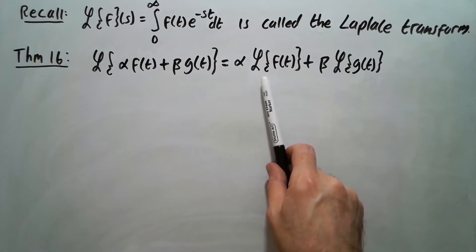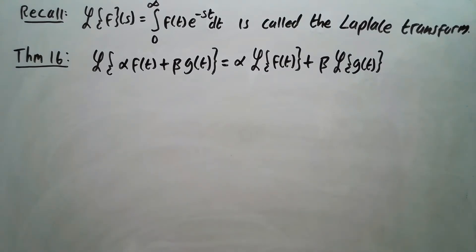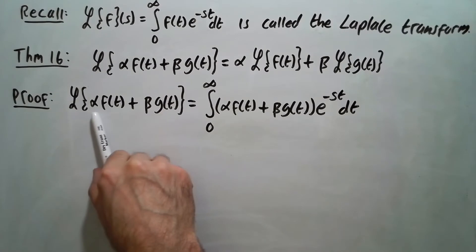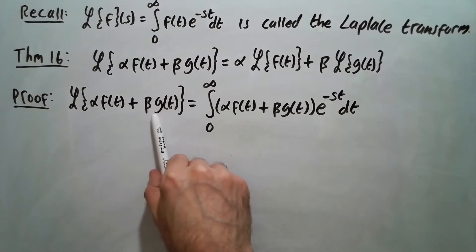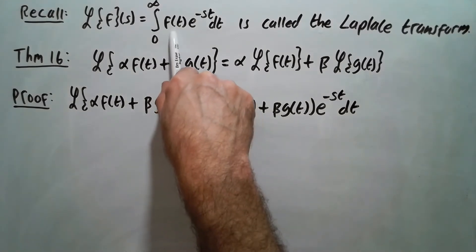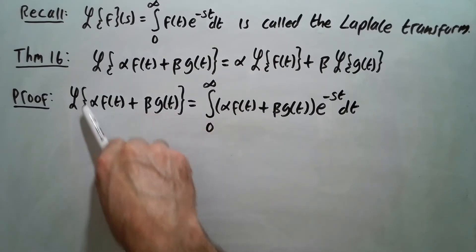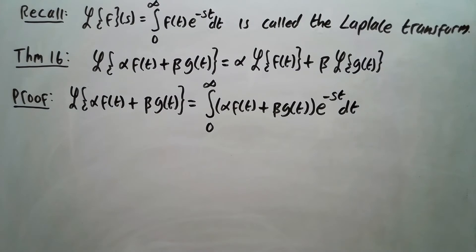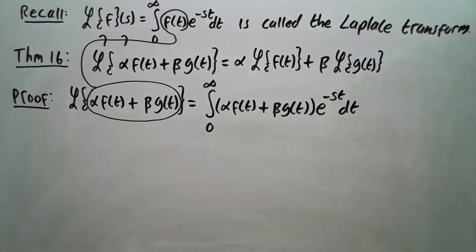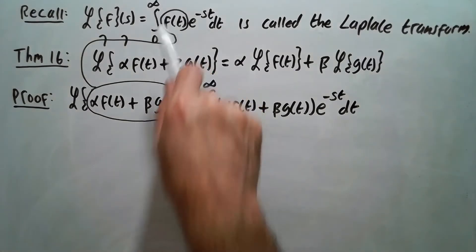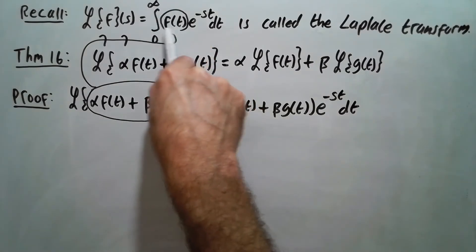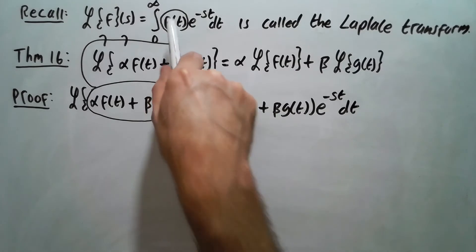So let's prove this. We look at the definition of the Laplace of alpha f plus beta g. Here's the definition — this whole thing, alpha f plus beta g, goes in place of what I'm calling f in the definition. It's not the greatest notation since I'm using f in two places, but this whole thing goes in place of f.